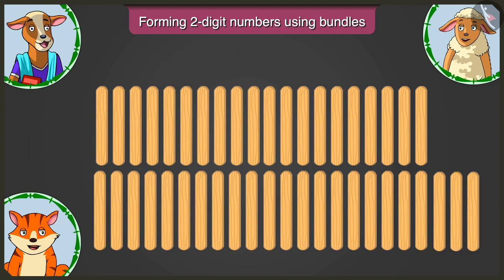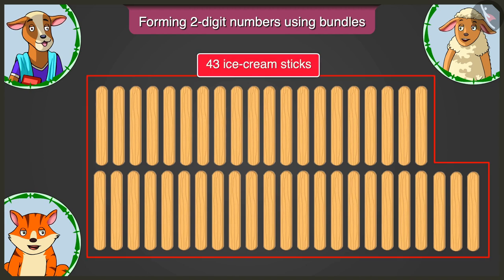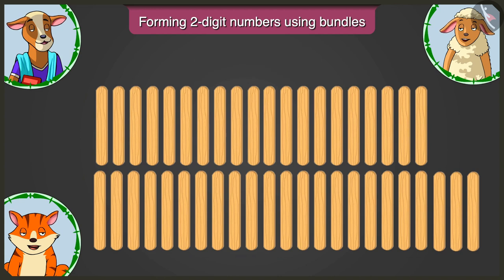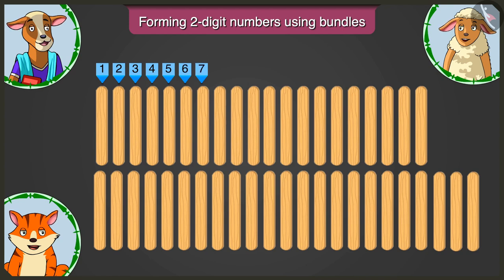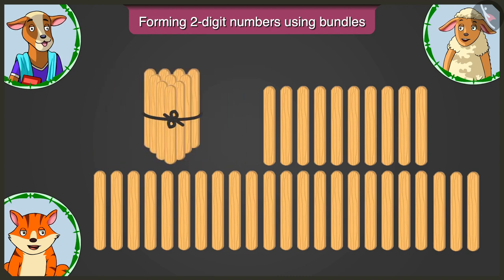Let me explain. There are 43 ice cream sticks. First of all, make one bundle of tens out of them. 1, 2, 3, 4, 5, 6, 7, 8, 9 and 10. Here is one bundle of tens.